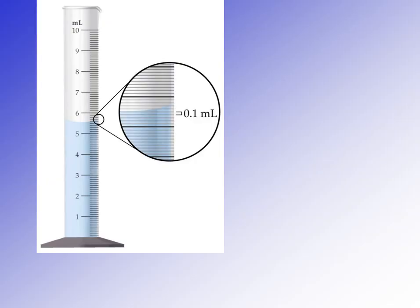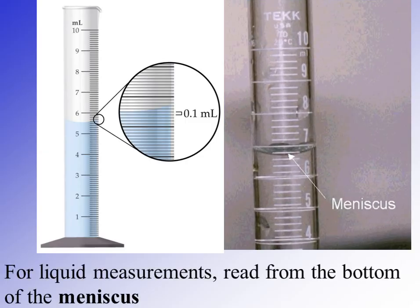In this illustration, we have a 10-milliliter graduated cylinder. The divisions between each numbered marking are split into 10 divisions, so each line represents a tenth of a milliliter. When reading this measurement, we would read not just to a tenth of a milliliter, but estimate to the hundredths. With a curved surface like this — what we see with liquids in a graduated cylinder — this is called a meniscus. The meniscus forms because of molecular attractions between the container material and the liquid molecules. When making a measurement with a meniscus, you always measure from the bottom of the meniscus.